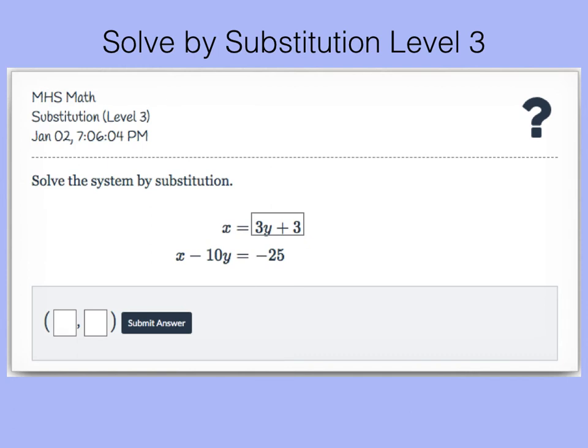Now that expression 3y plus 3 we're going to substitute in place of x in the second equation. And we're just going to write our new equation carefully. Instead of x we're going to write 3y plus 3 minus 10y equals negative 25.